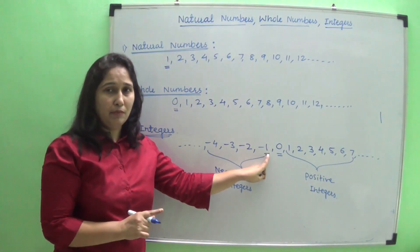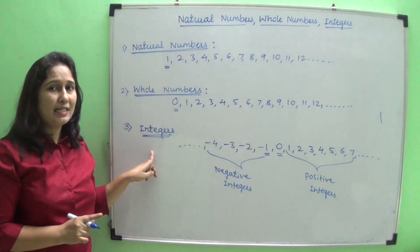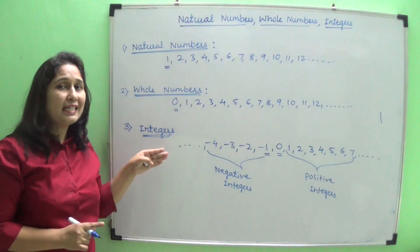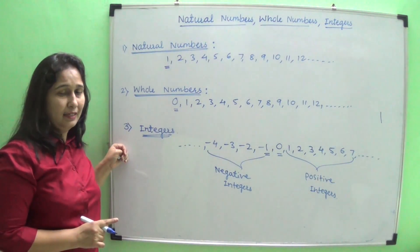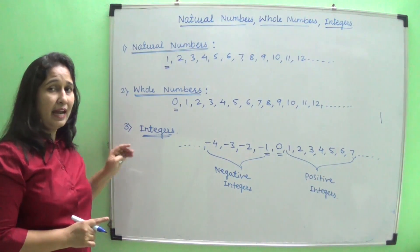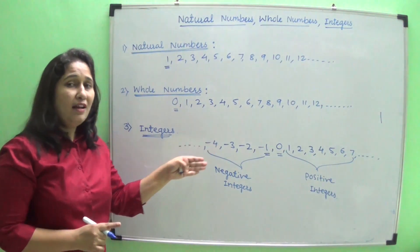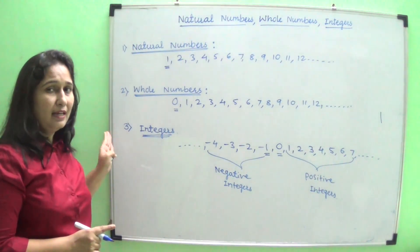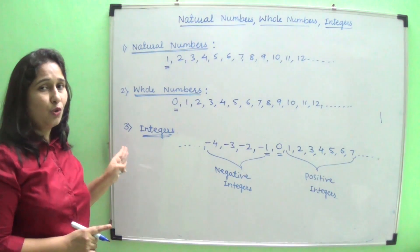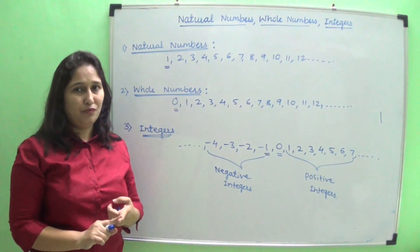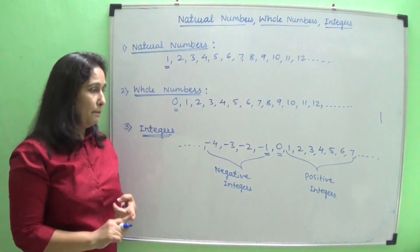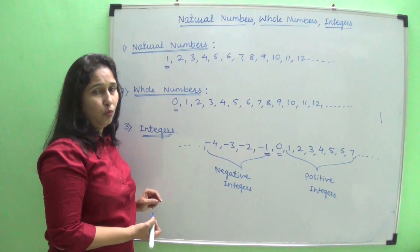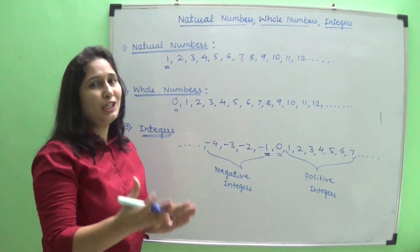It is difficult to find the lowest negative number because integers extend towards the left side, and to the left all numbers keep decreasing. So it is impossible to find the last number on the left side — the lowest negative number is impossible to define. But the highest negative number is minus 1.